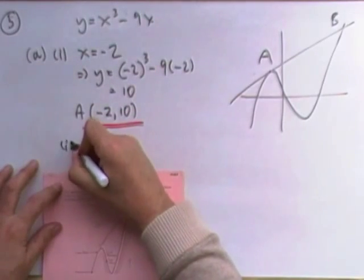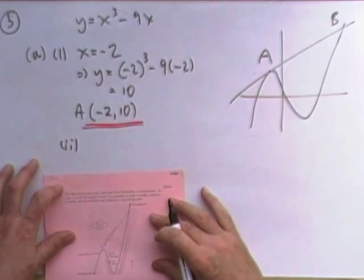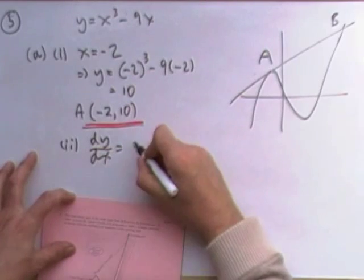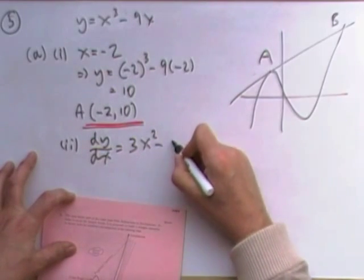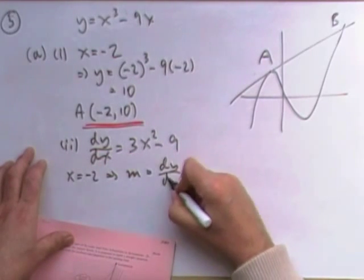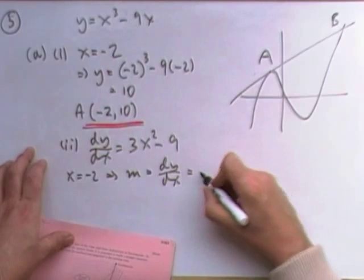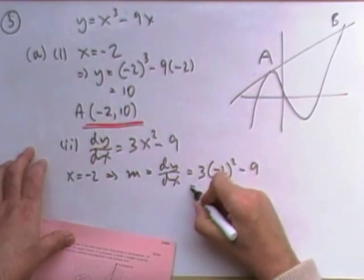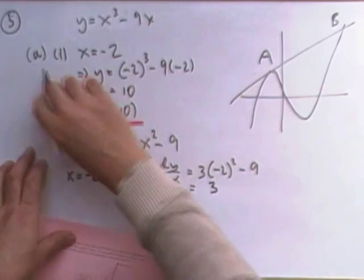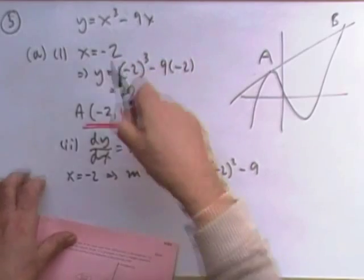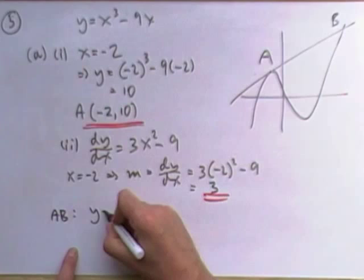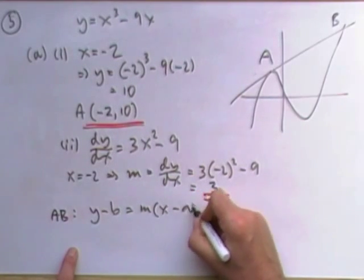Second bit. Find the equation of the line AB, which is the tangent. Right. So I'll differentiate it. dy/dx will be three X squared minus nine. If X is negative two, that means the gradient will be given by the derivative at that point, which will be three times negative two squared minus nine. And that's going to be three times four minus nine, which is three.